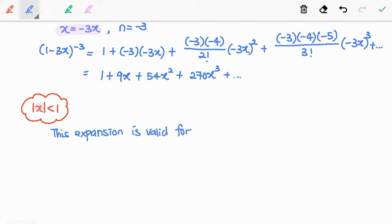So, this expansion is valid for absolute negative 3x less than 1. Then, we have absolute 3x less than 1 because the modulus will get rid of the negative sign. Now, factor out the 3. Divide both sides by 3. We have absolute x is less than 1 over 3.